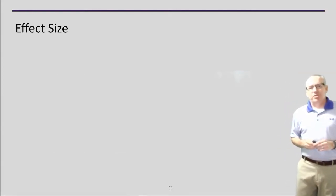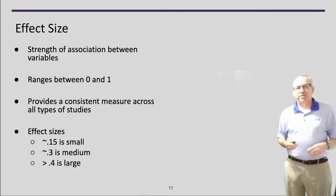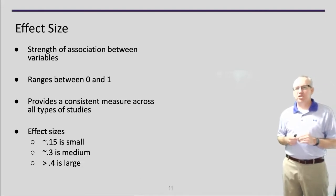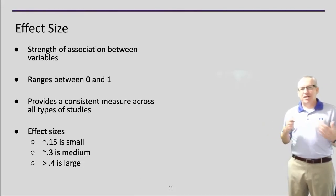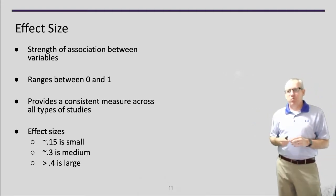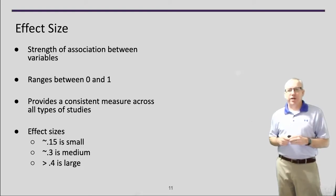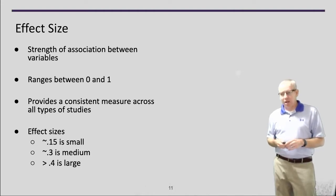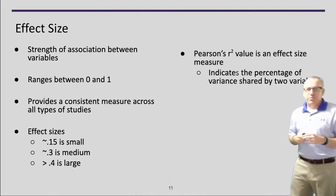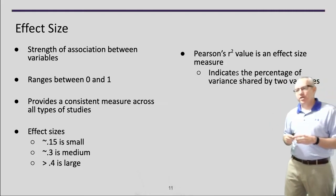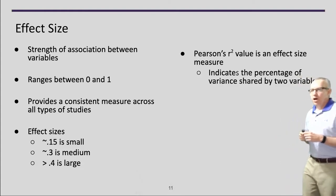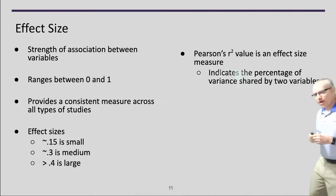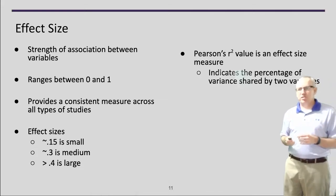Another important concept is effect size, which shows the strength of association between variables. This ranges between 0 and 1 — not positive or negative, just 0 to 1 — and the higher the number, the better. It's a guide: 0.15 or less is small, 0.3 is medium, and 0.4 or greater is large. Pearson's R-squared is an example of an effect size measure — it shows the percentage of variance shared by the two variables. Effect size can be computed across all different kinds of studies, allowing you to compare different kinds of statistics.